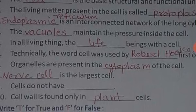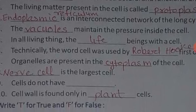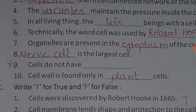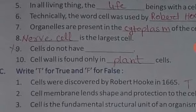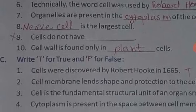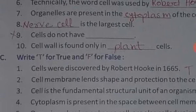Fill in the blanks: the cell is the basic structural and functional unit of life. The living matter present in the cell is the protoplasm. Endoplasmic reticulum is an interconnected network of cylindrical structures. The vacuole maintains the pressure inside the cell.